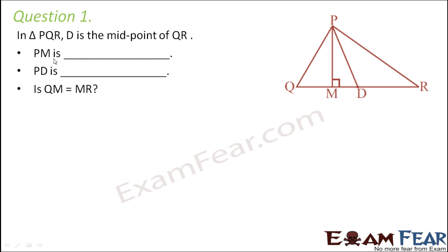So what is PM? PM is basically a line segment which is drawn from P to its opposite side such that it is perpendicular on the opposite side. This line segment which falls perpendicular to the opposite side is nothing but altitude or height.